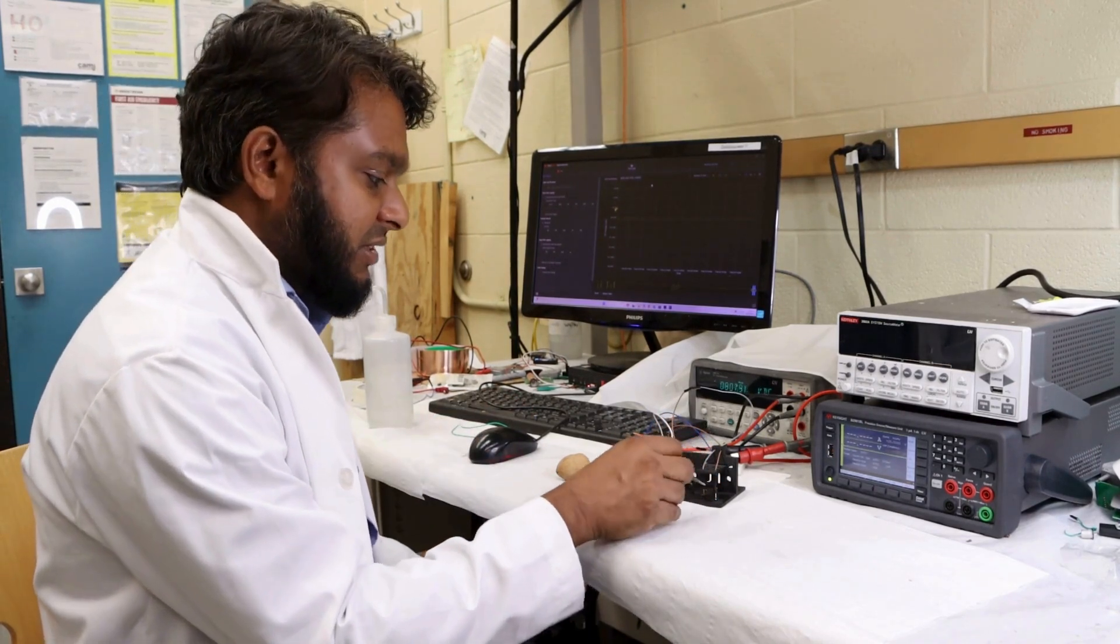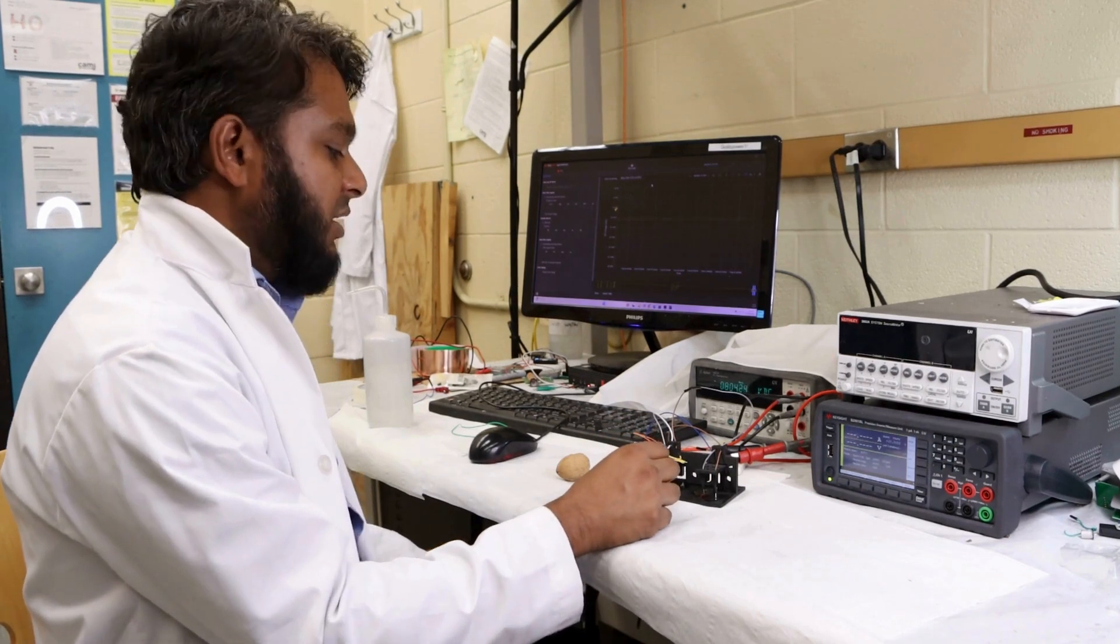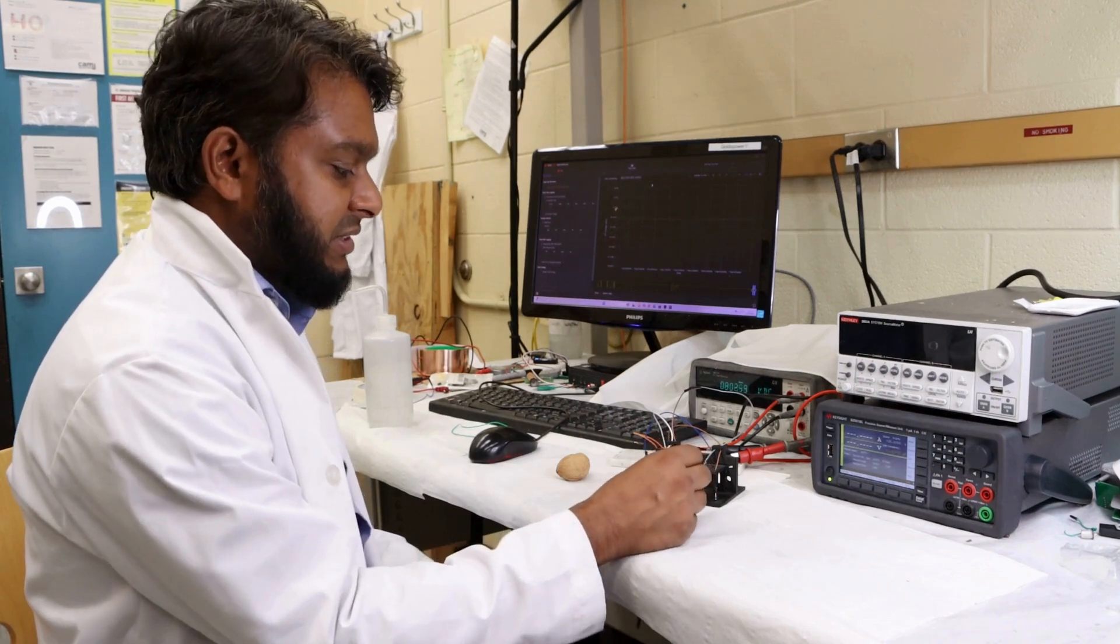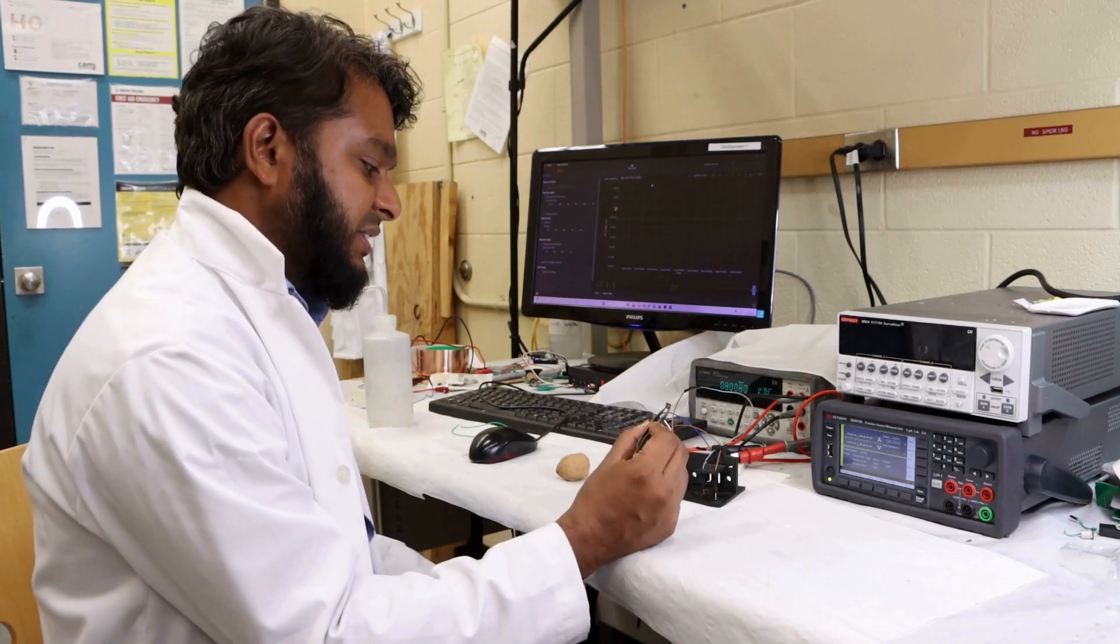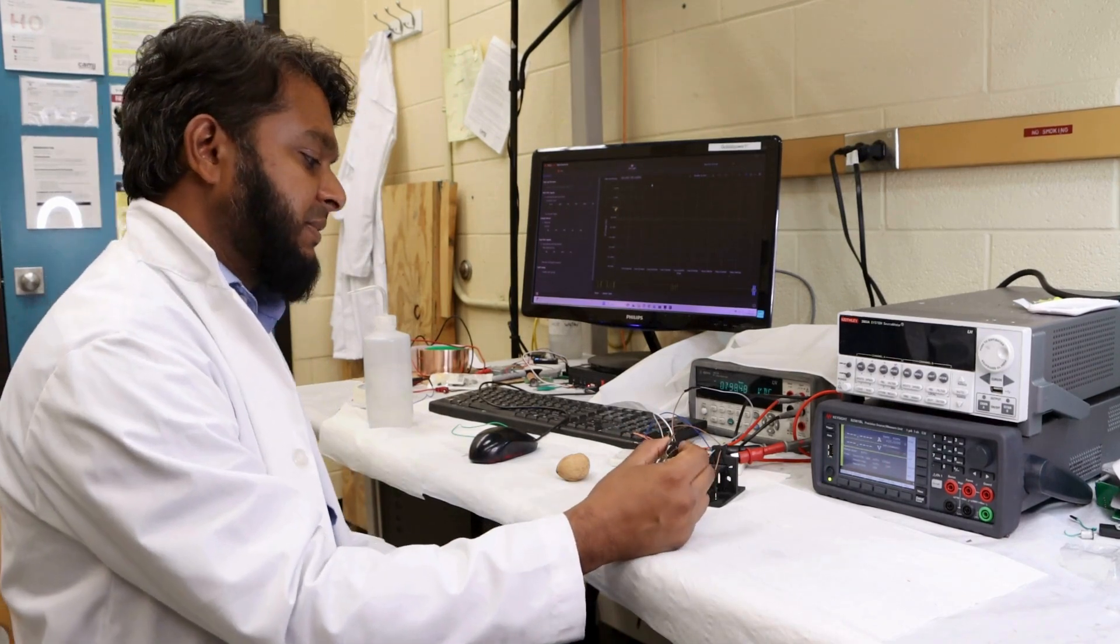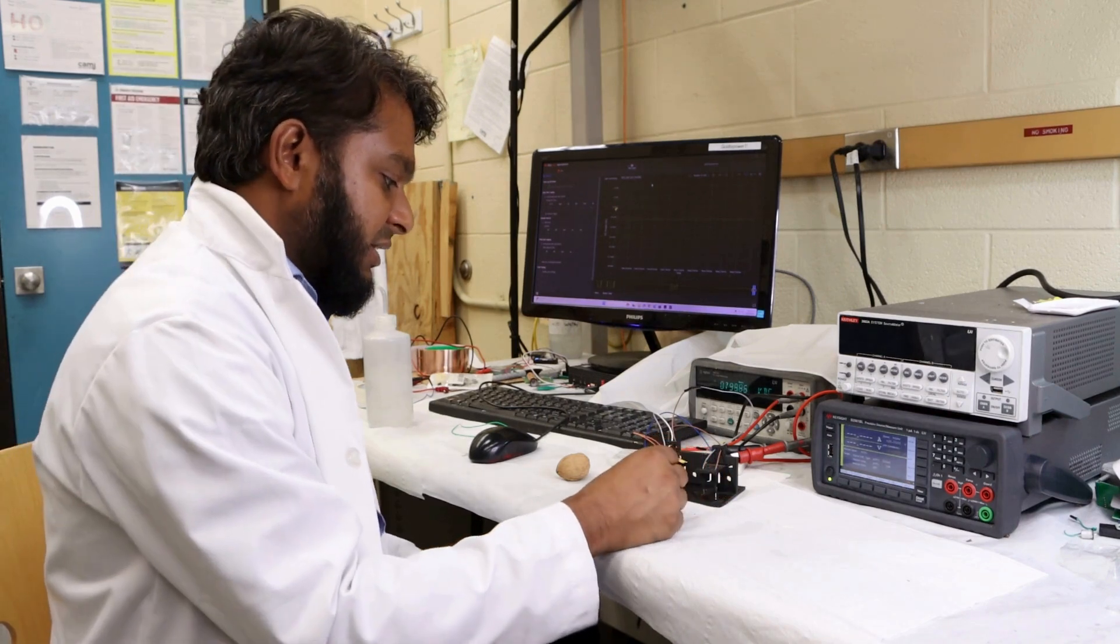Here you can see one single small structure can harvest energy around 0.9 volts. By connecting multiple of these small devices, we can power small electronic devices like calculators or a smartwatch.